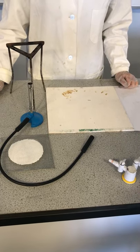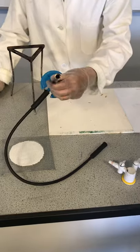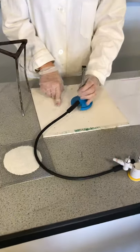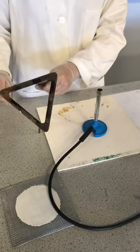We will now do a setup of these heating equipments by placing the Bunsen burner on top of the heatproof mat, and then place the tripod over the Bunsen burner.